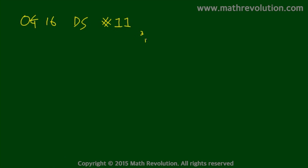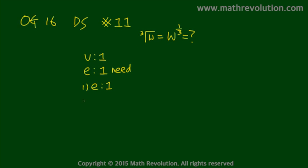Let's take a look at the official guide 2016 DS number 11 and modify the original question and condition using the variable approach method. The question is asking what is the cube root of W, which we can write as W to the power of 1 over 3. There is only one variable, W, so we need one equation. Condition 1 provides one equation and condition 2 provides another, so there is a high chance that D is our correct answer choice.